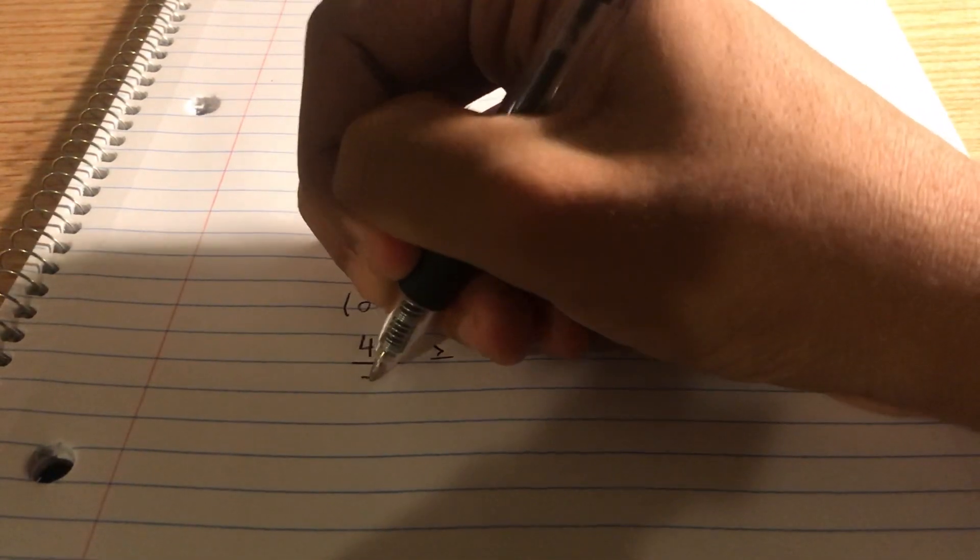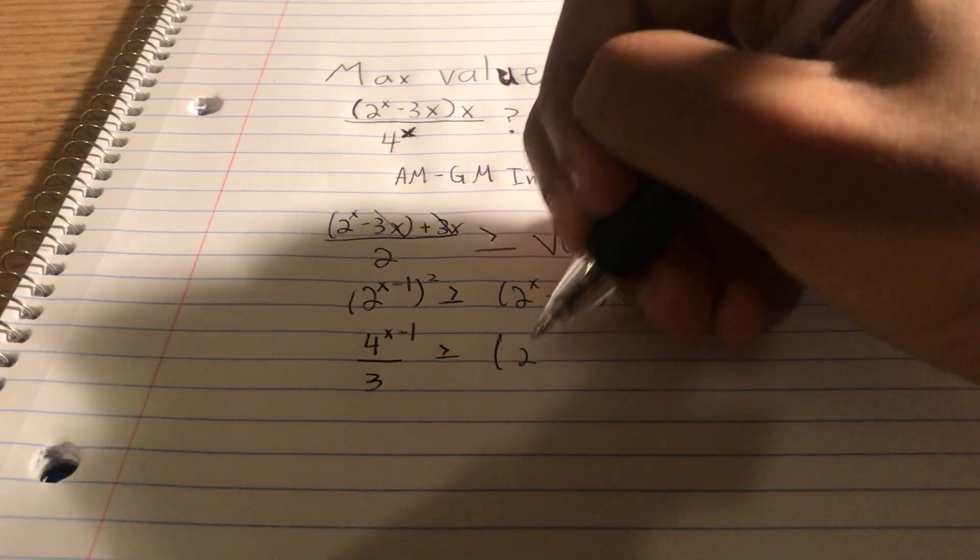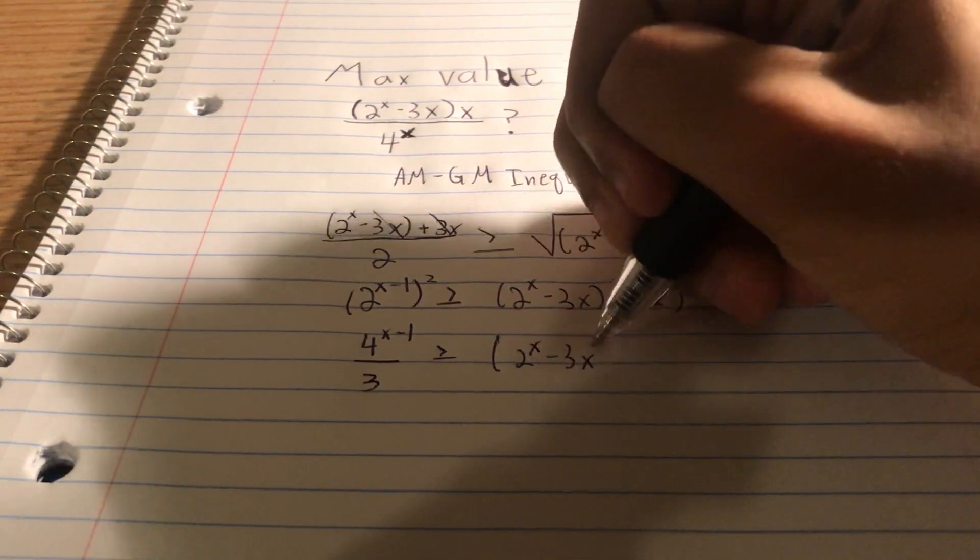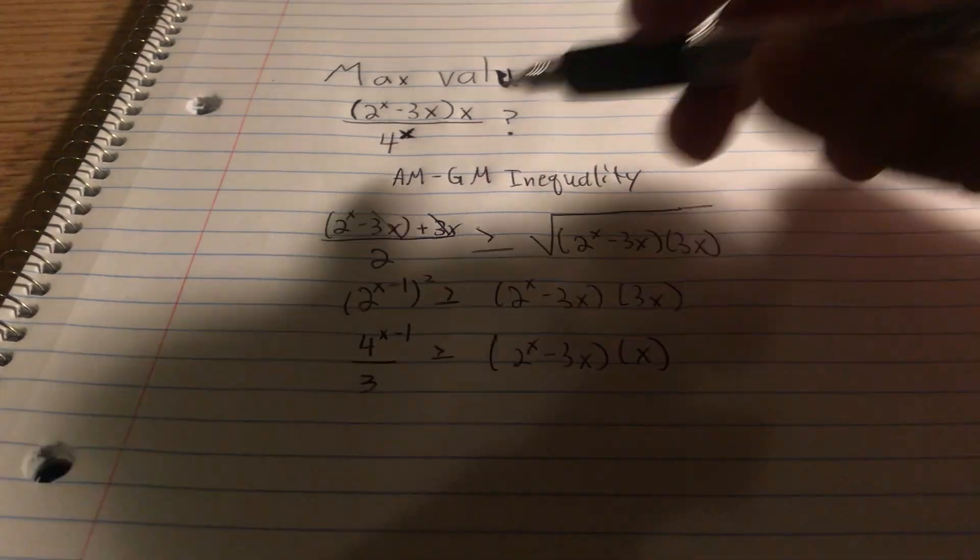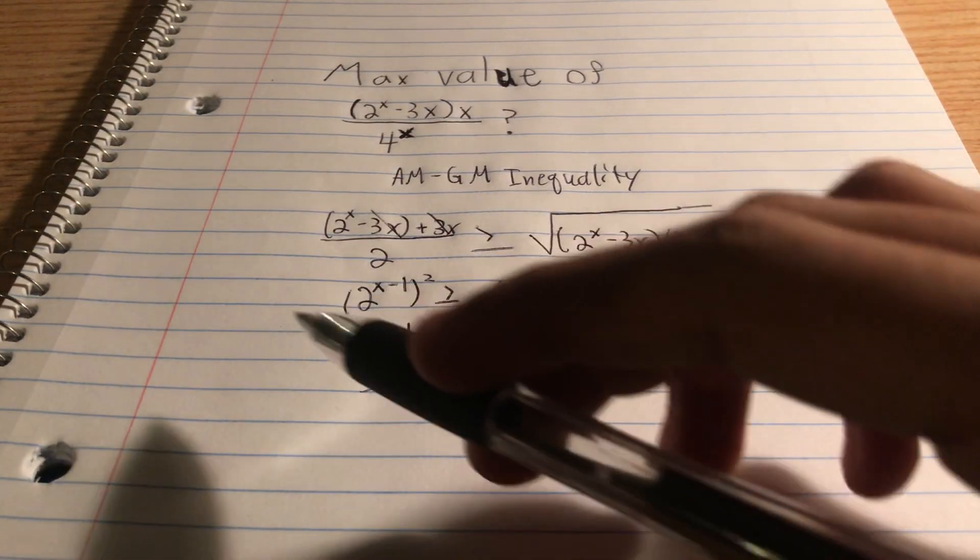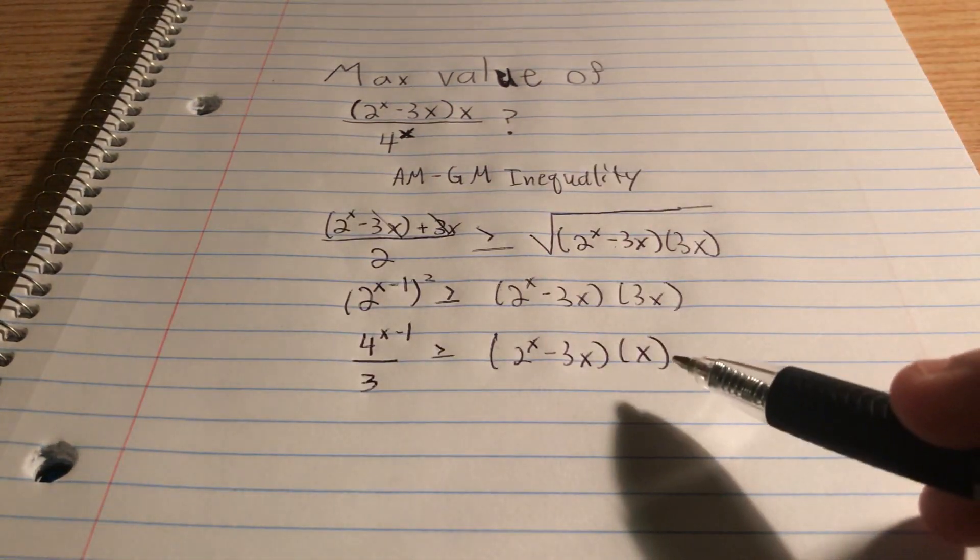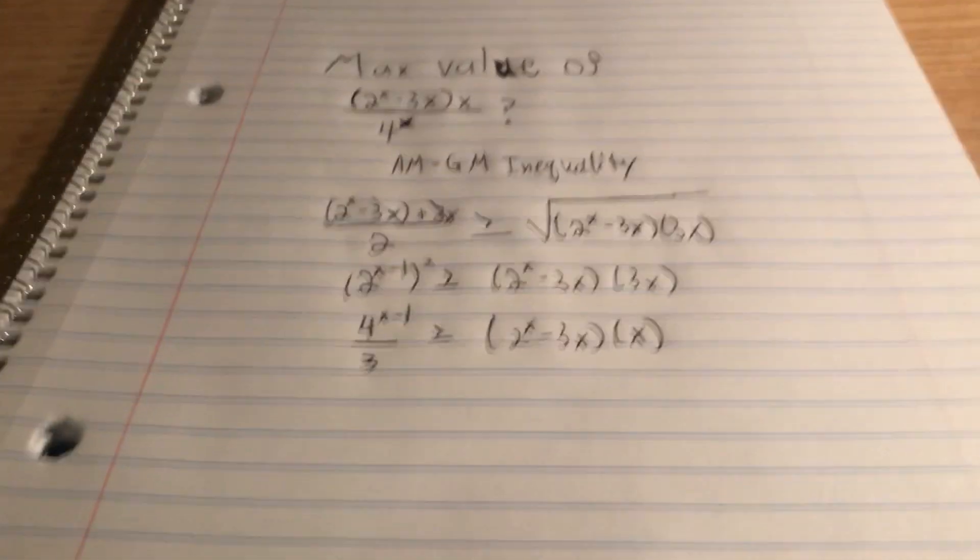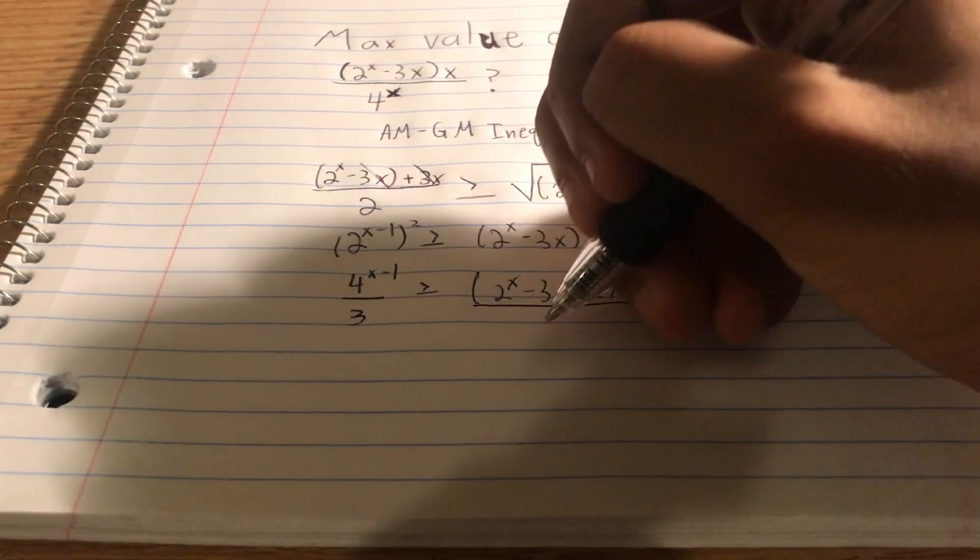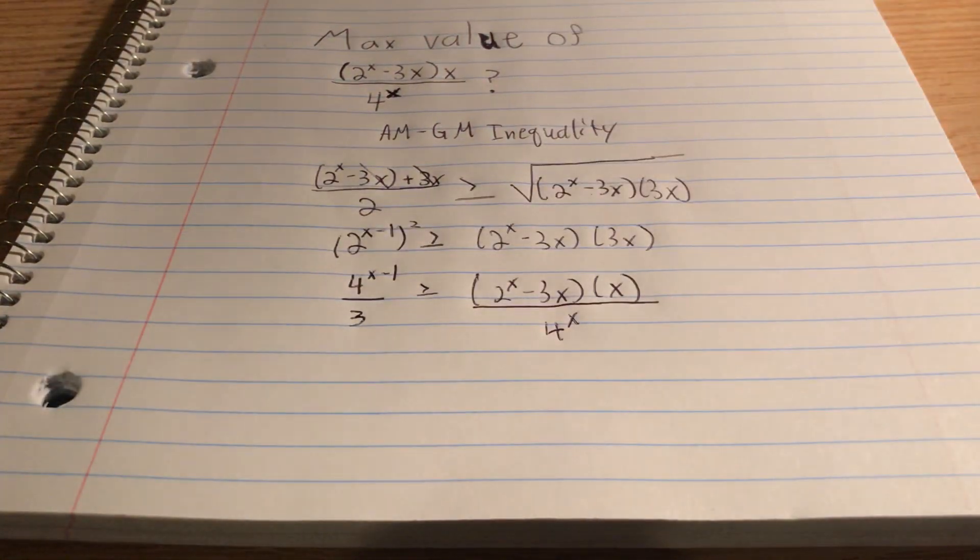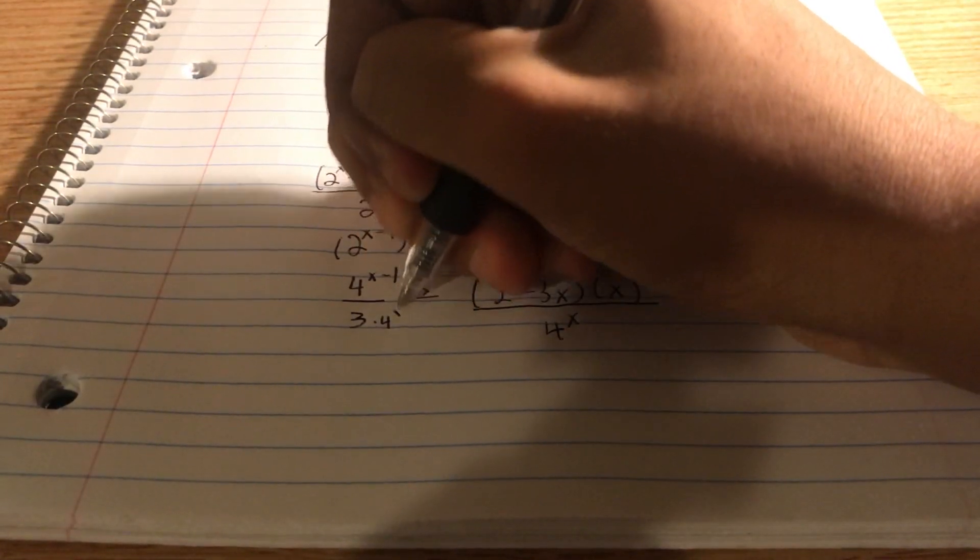We want to get rid of this 3, so we're going to divide it on both sides. So on this side, we have divided by 3. And this side, we just have the original equation, 2 to the power of x minus 3x times x. So we have, believe it or not, our numerator right here. So that's awesome. We're almost done, as you can see here. How do we get this denominator over here? Well, we just have to divide on both sides 4 to the power of x. So let's divide this by 4 to the power of x. And let's divide this term by 4 to the power of x. Like that. And we are done, as you can see here.